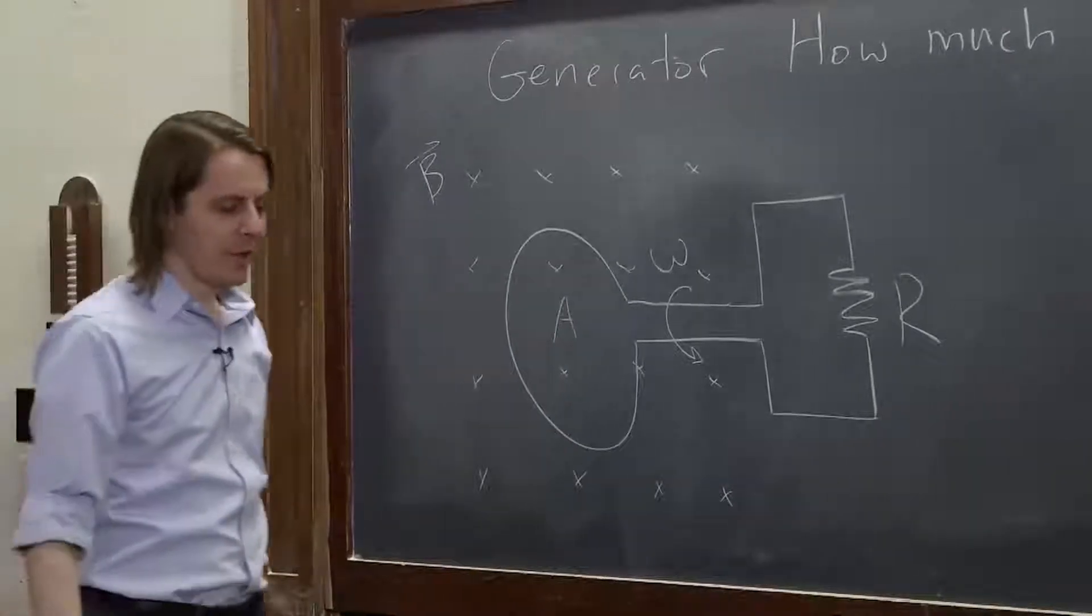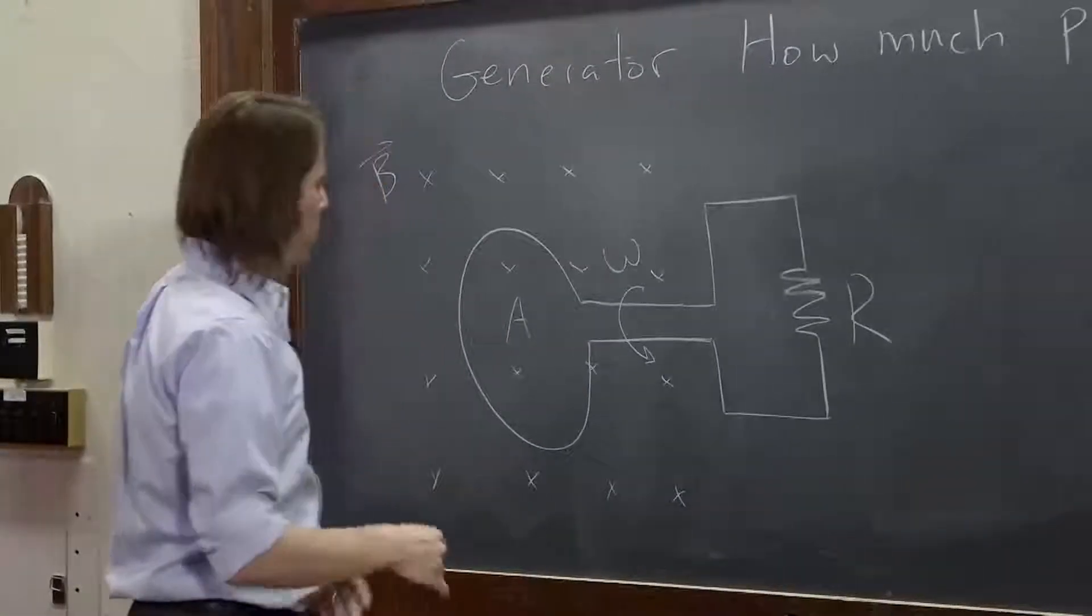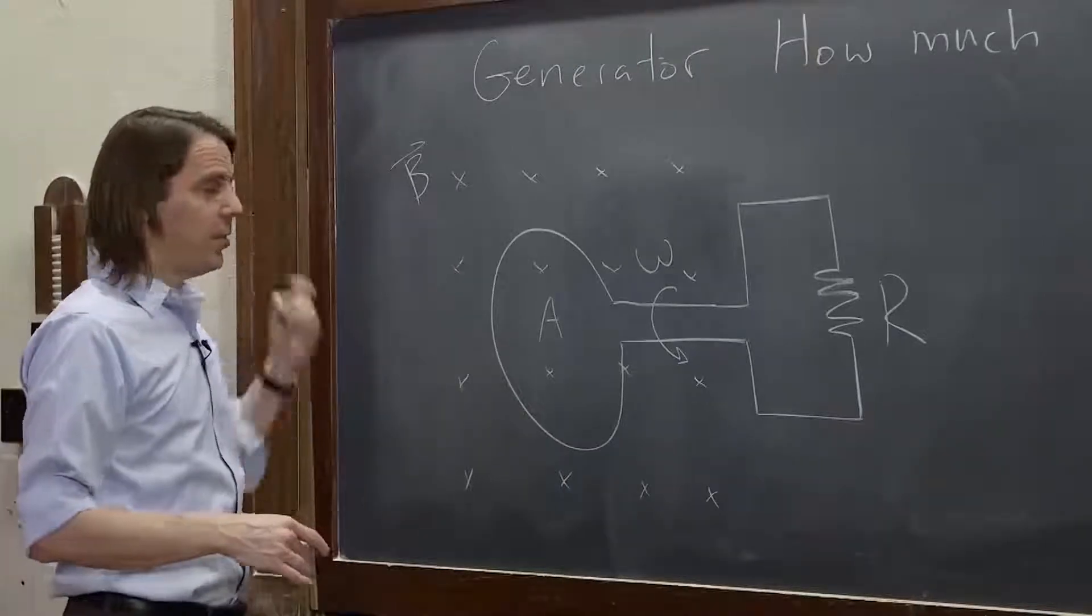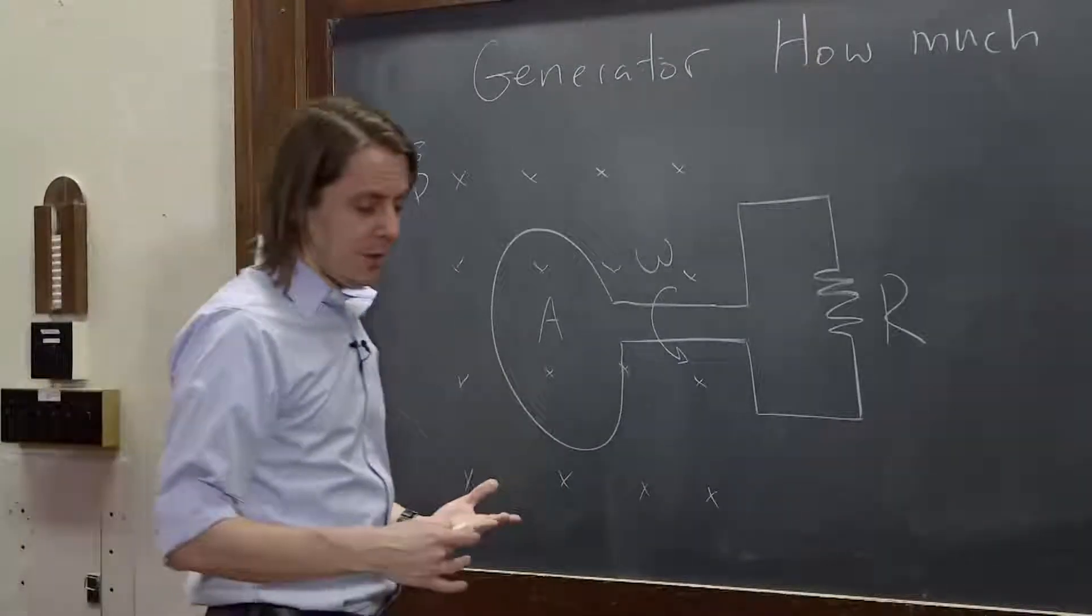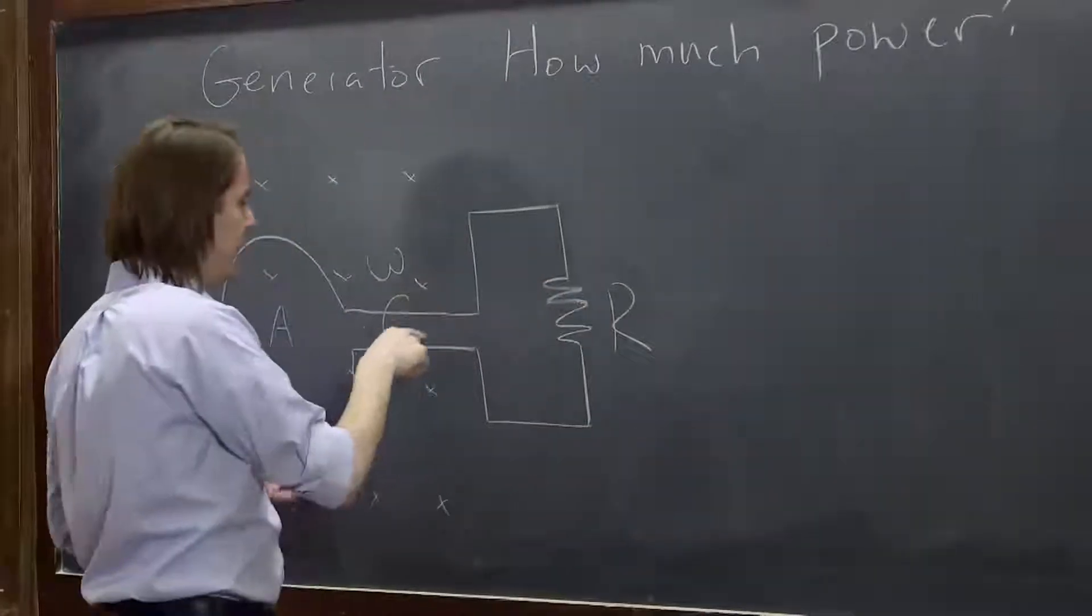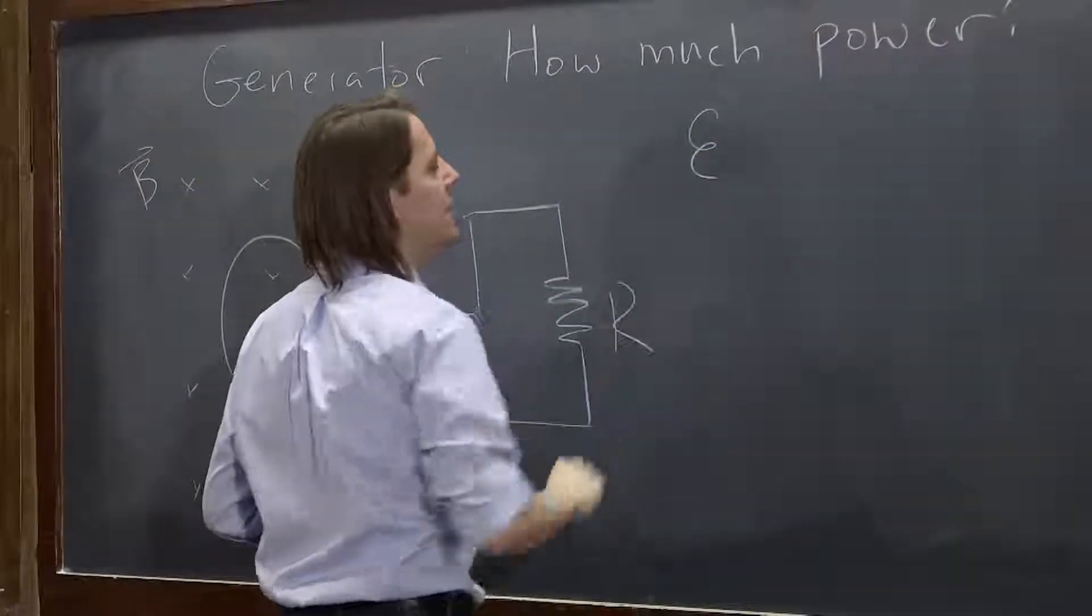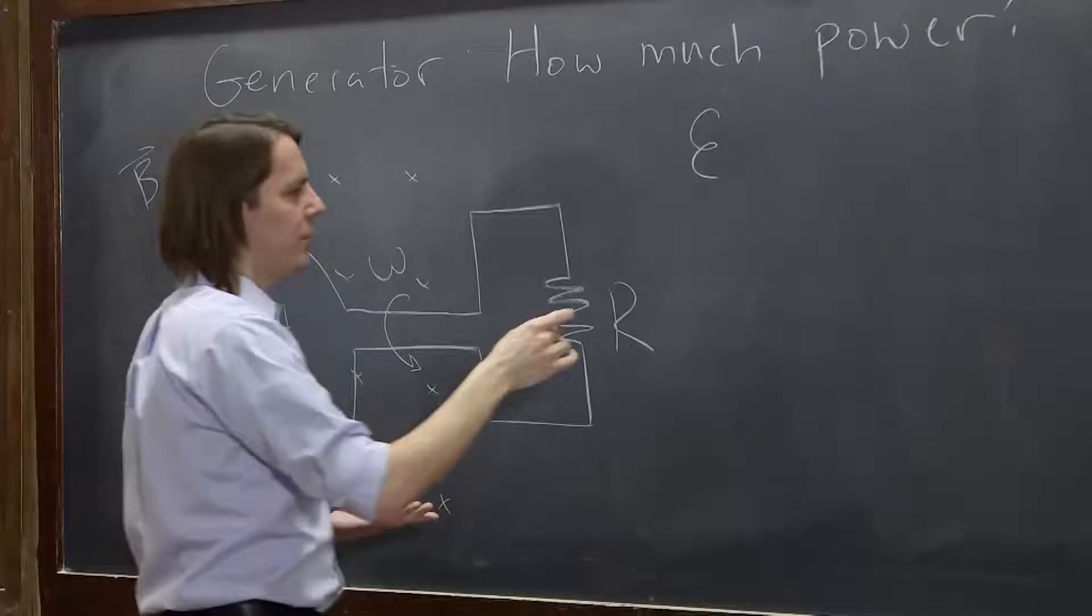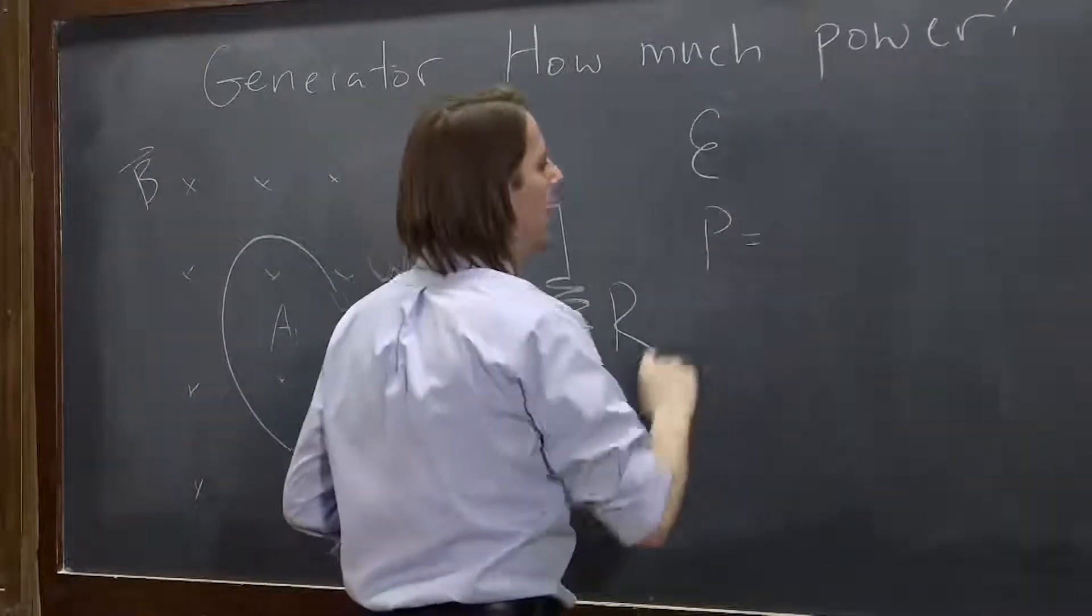So how much power will be dissipated in the resistor? Well, at this point you can treat it very similar to how we thought about DC circuits. We know that you're going to get an EMF that we already calculated. So we apply it across the resistor. So the power is,